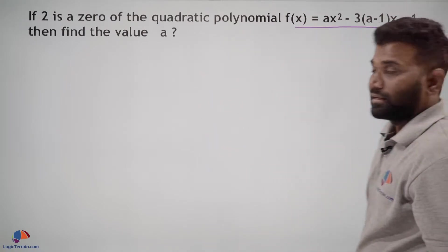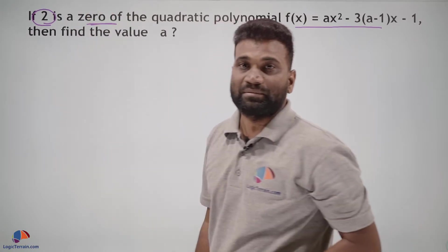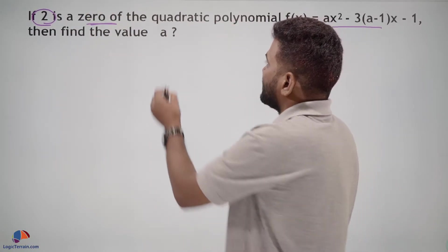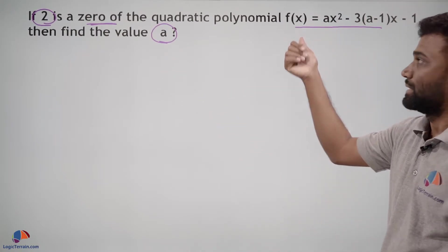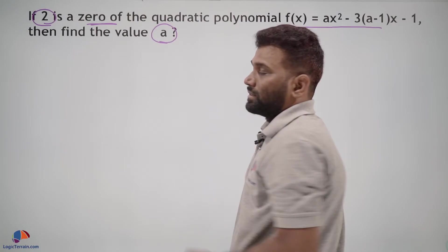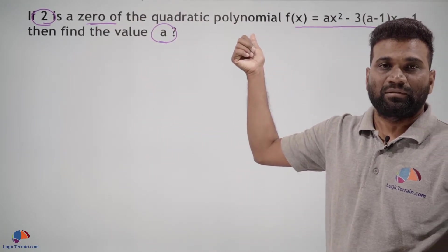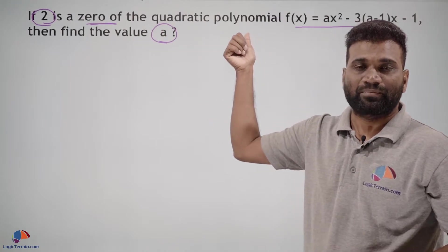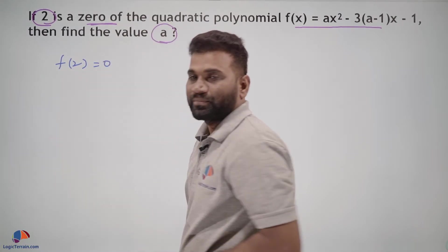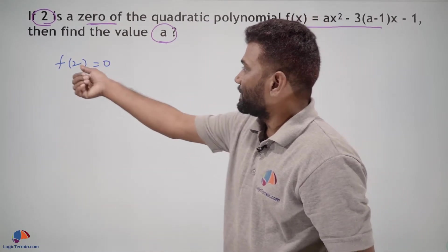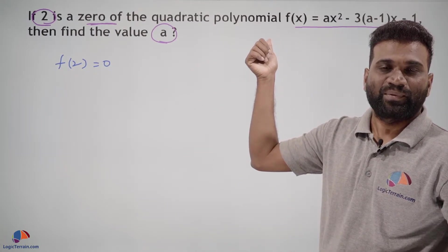A quadratic polynomial, and for this quadratic polynomial 2 is a zero. It means by making use of this we need to find the value of a which is given in this quadratic polynomial. Since it is given 2 is a zero of this quadratic polynomial, which means 2 is a solution, then f(2) equals zero, which means replace x by 2 will get zero in this polynomial.